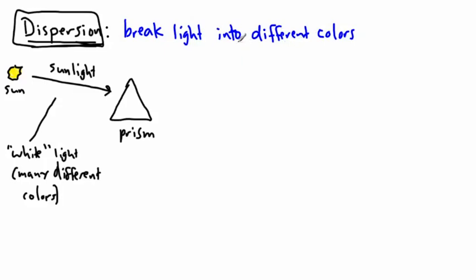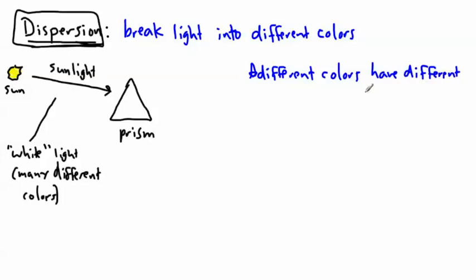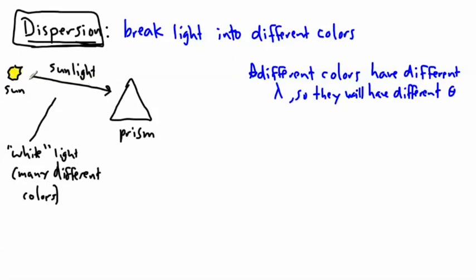What's really happening is that the different colors all have a different wavelength — remember the symbol for wavelength is lambda. So when we apply Snell's law, that means as they go through this material they will have different angles. Light with a different wavelength will end up having a different angle of refraction, so this white light will get split or broken up into different colors.